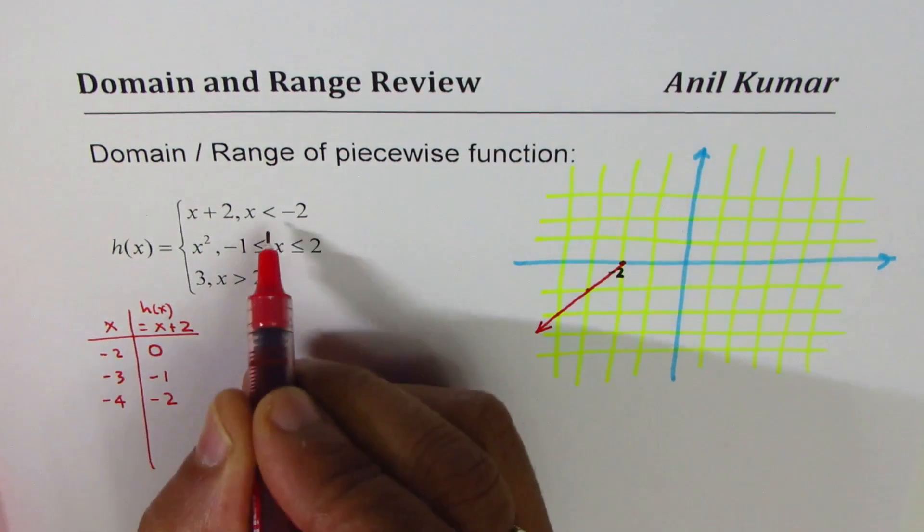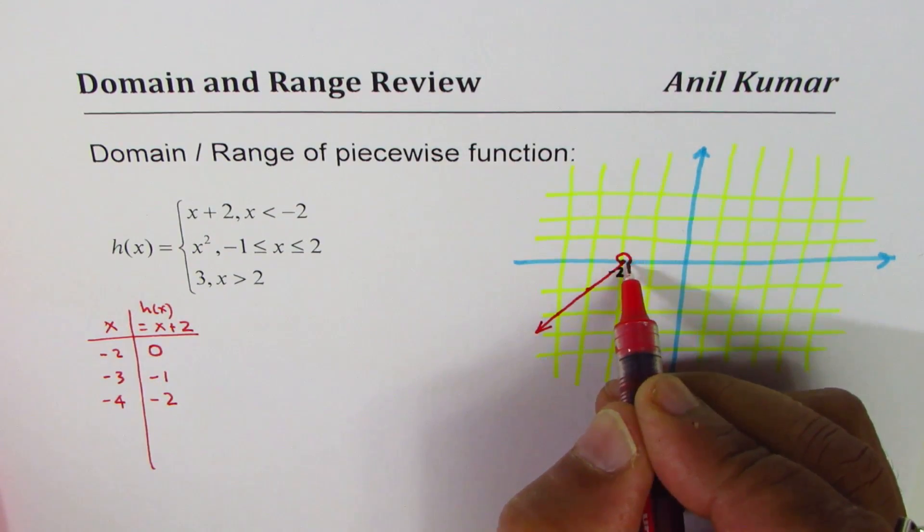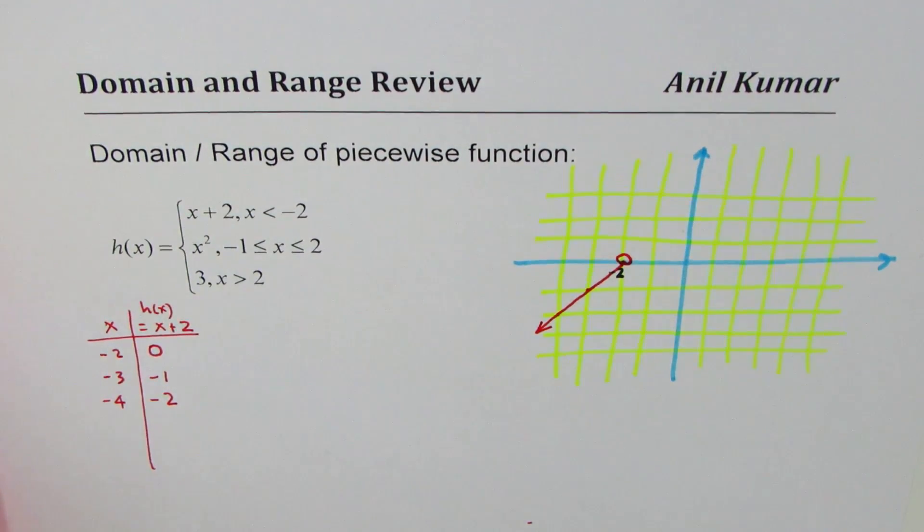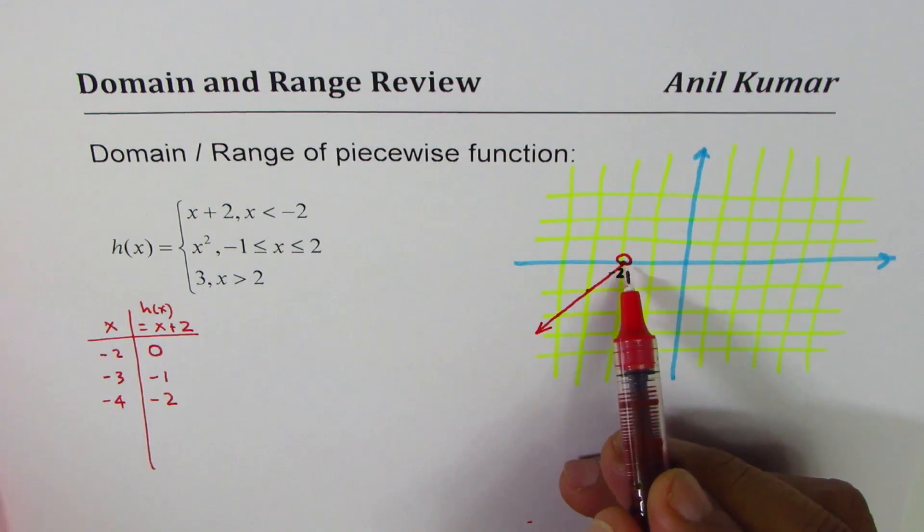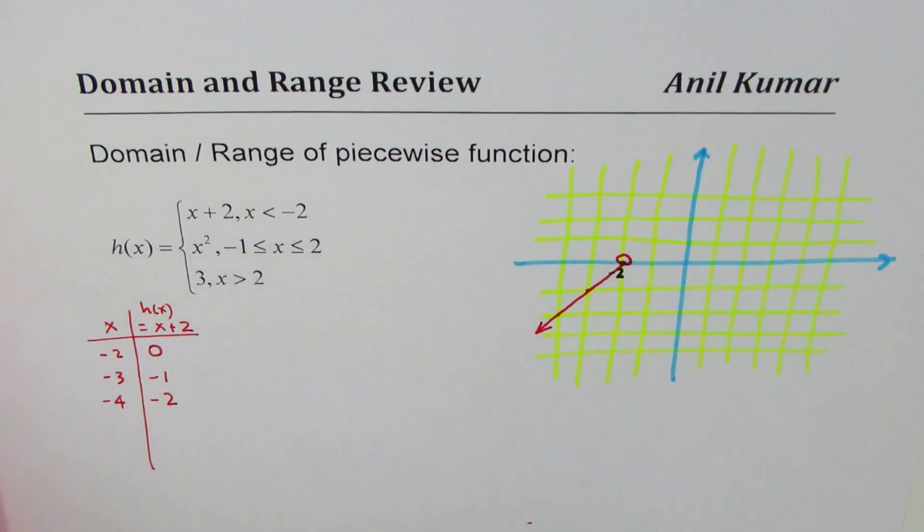Now, at this point, since it is less than, we should make a circle which is not filled in. So this point, the x-intercept is not included in the first piece.